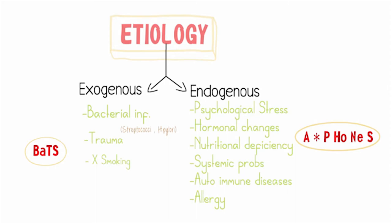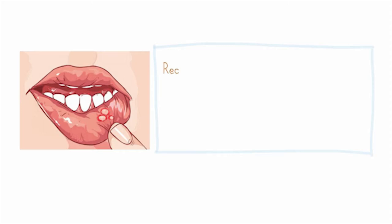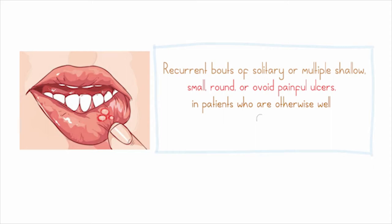Aphthous ulcers are pretty common, but there are unusual variations in which recurrent bouts of solitary or multiple small, round or oval, painful ulcers occur in patients who are otherwise well. This is characteristic of a condition called RAS, which stands for Recurrent Aphthous Stomatitis.